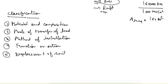Before going into the design, let's see the classification first. Piles can be classified on the basis of various criteria: material and composition, mode of transfer of load, method of installation, function or action, and displacement of soil. Let's see these classifications one by one.